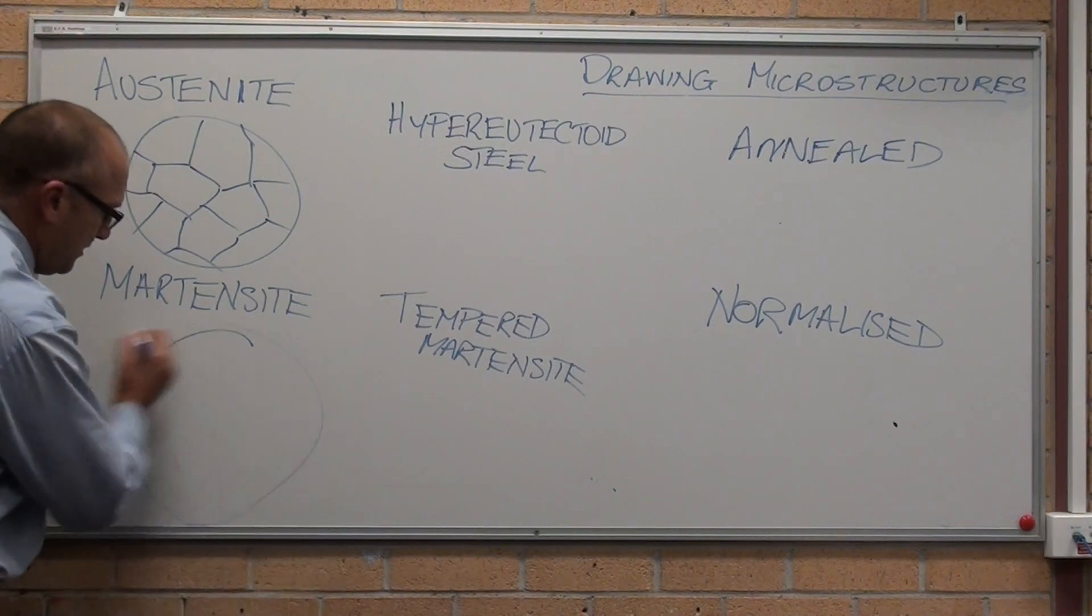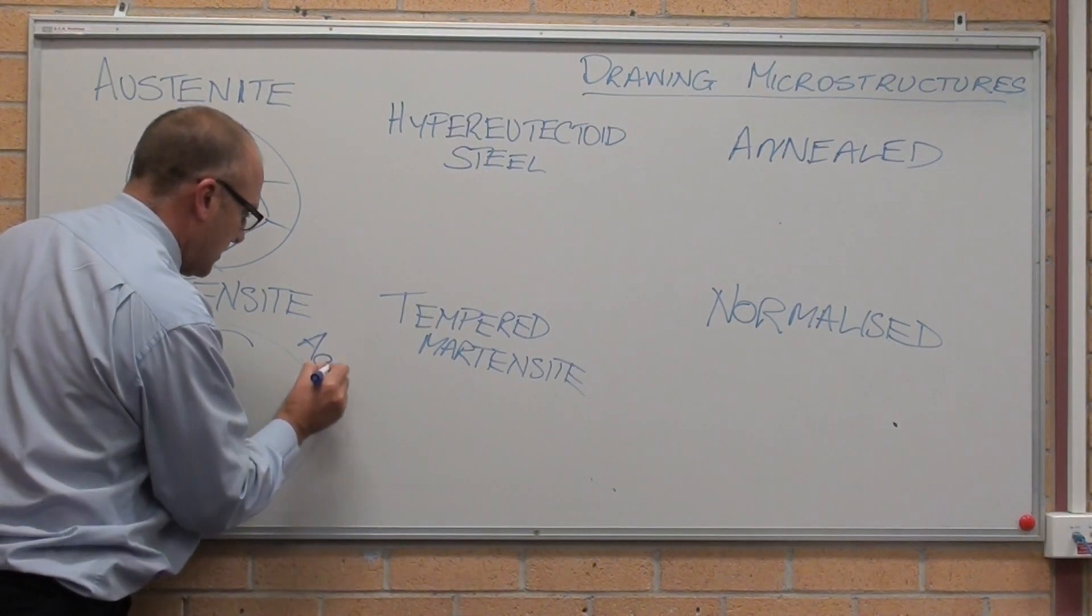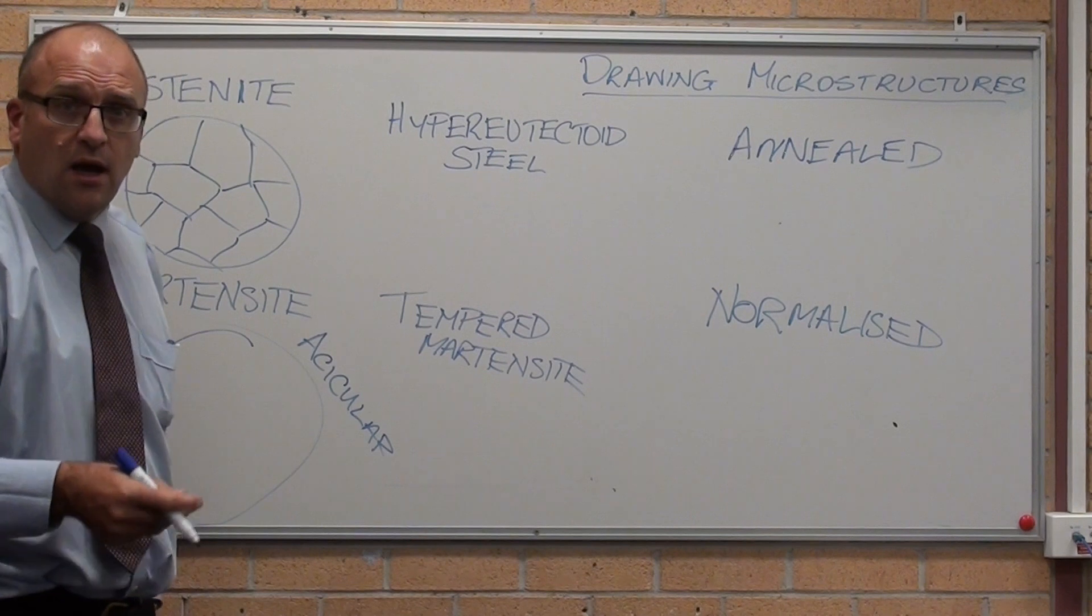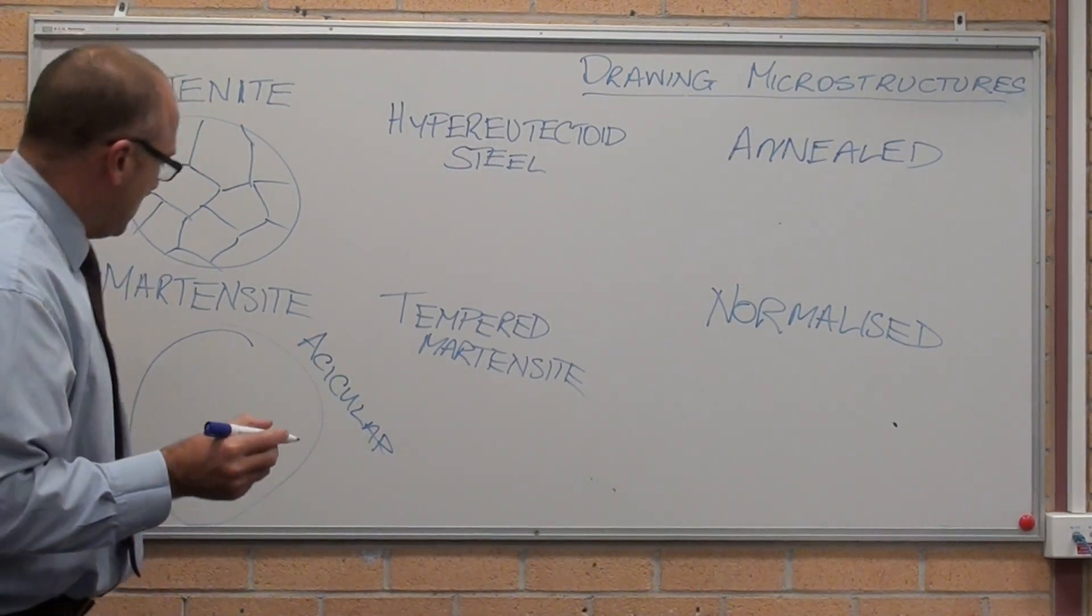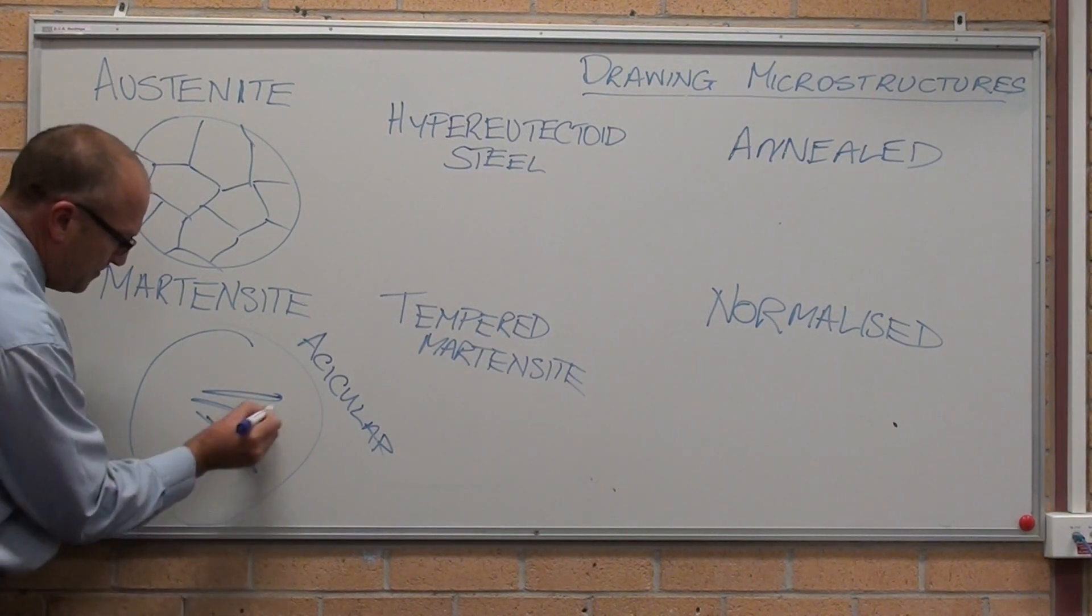Martensite, we talk about a particular word called an acicular structure. Acicular, it's Greek or Latin, I don't know. It means needle-shaped. Acicular martensite is needles, random needles.